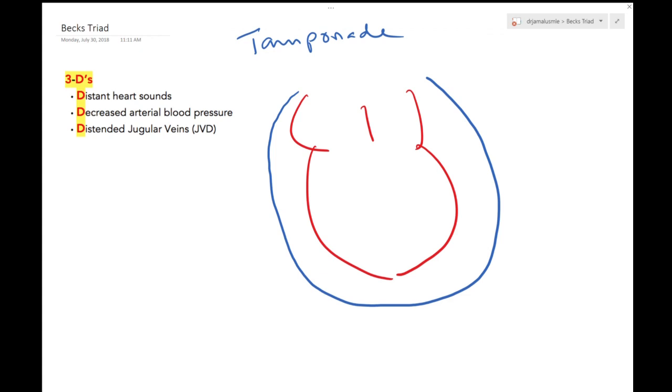Welcome to our class today where we will be talking about tamponade and tamponade physiology. So in tamponade, as you can see, this is the heart border and this is the pericardial border. In tamponade, there is fluid accumulating in this space, which usually has a little bit of fluid but not that much.